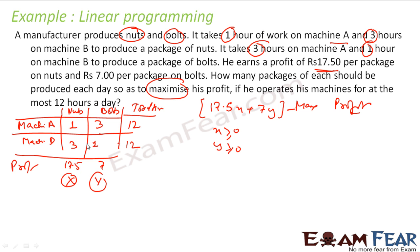Second, for machine A, the total consumption will be X plus 3Y, because X hours are used in making nuts and 3 times Y in preparing bolts. So machine A: X plus 3Y has to be less than or equal to 12, because the maximum hours is 12.